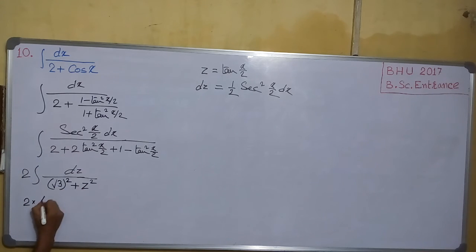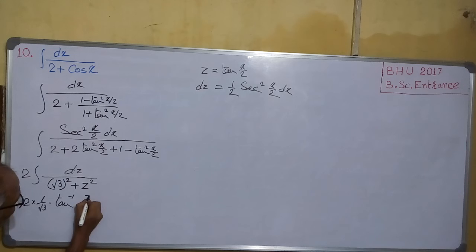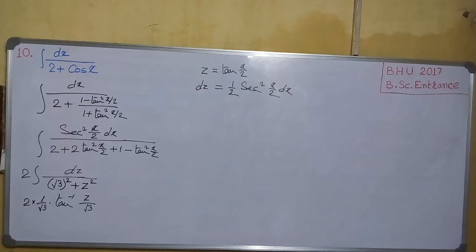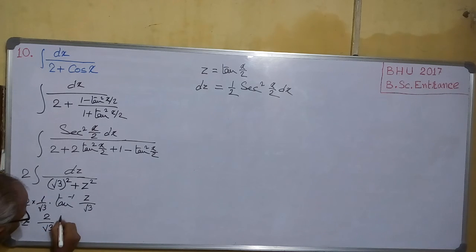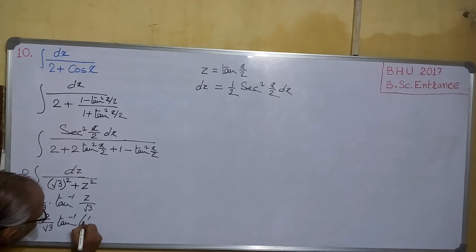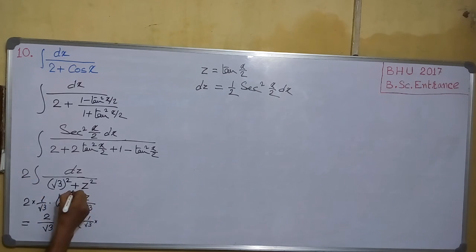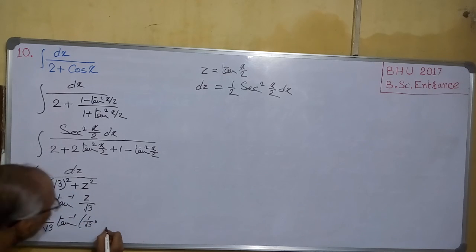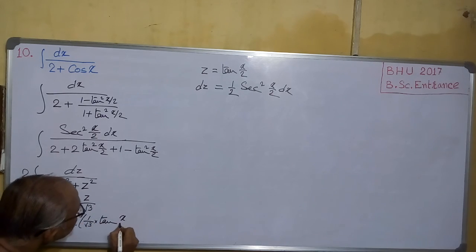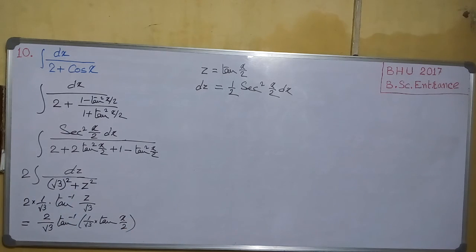This gives us 2 times (1/√3) · tan⁻¹(z/√3). Now substituting back z = tan(x/2), we get (2/√3) · tan⁻¹(tan(x/2) / √3). So this will be our solution, plus the constant of integration C.